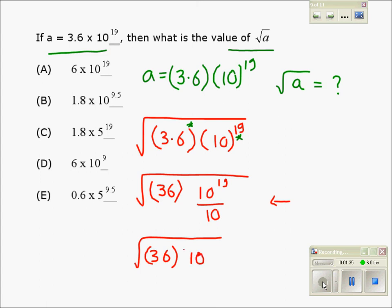Why? Because 10 to the power 19 over 10 becomes 19 minus 1, which makes it 18. And if we take root, 36 becomes 6, and root of 10 to the power 18 becomes 10 to the power 18 divided by 2.